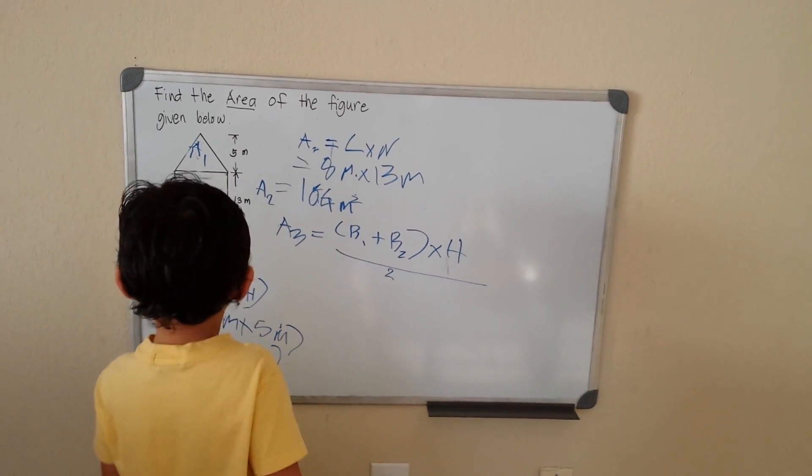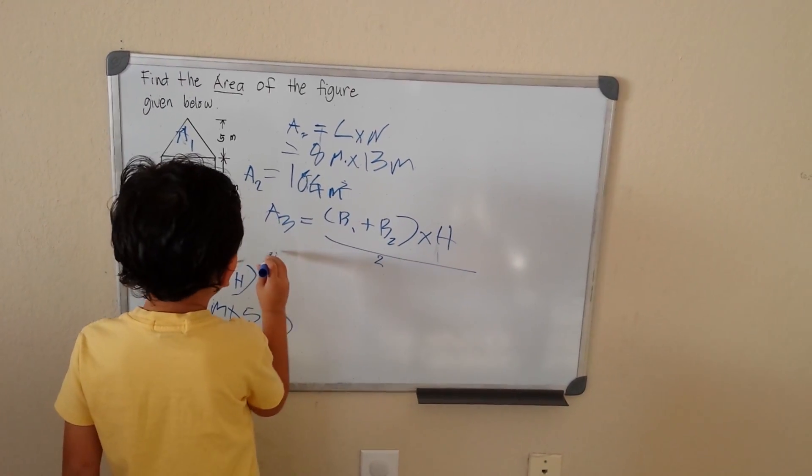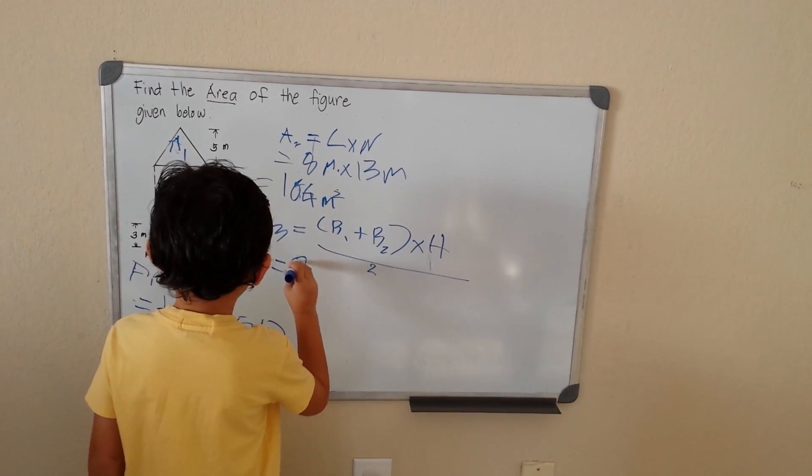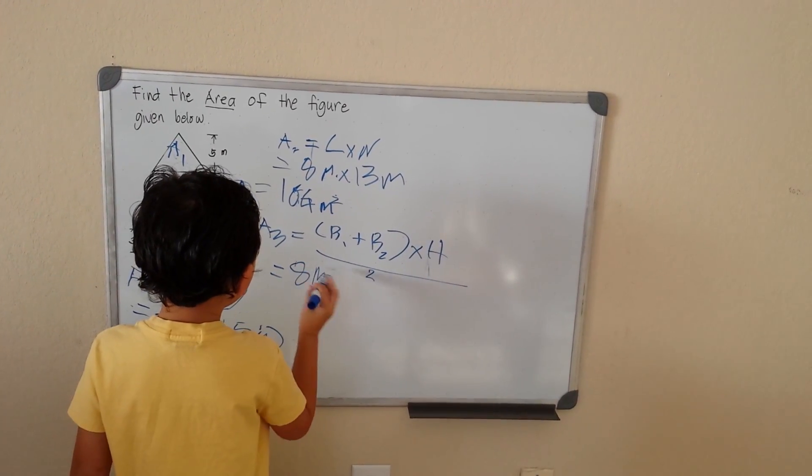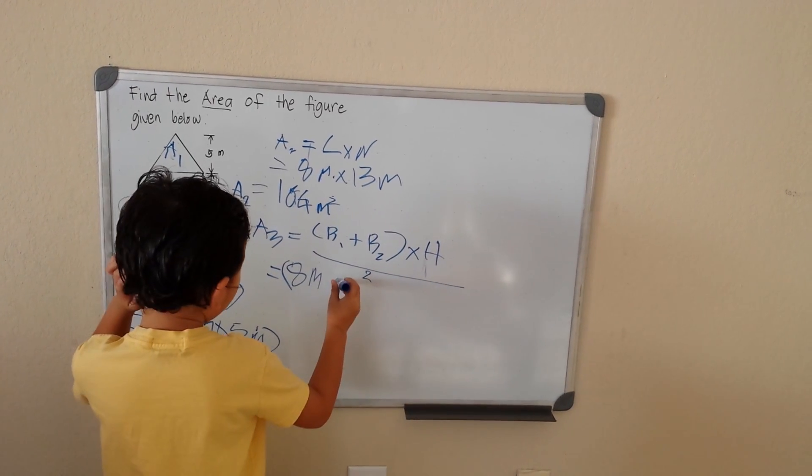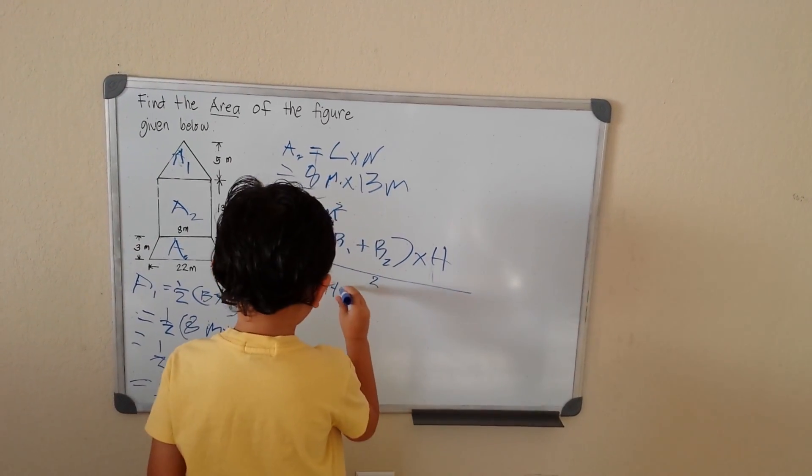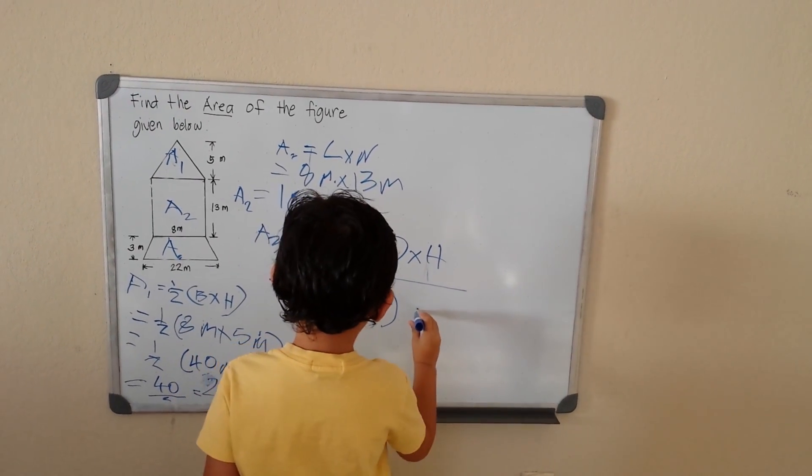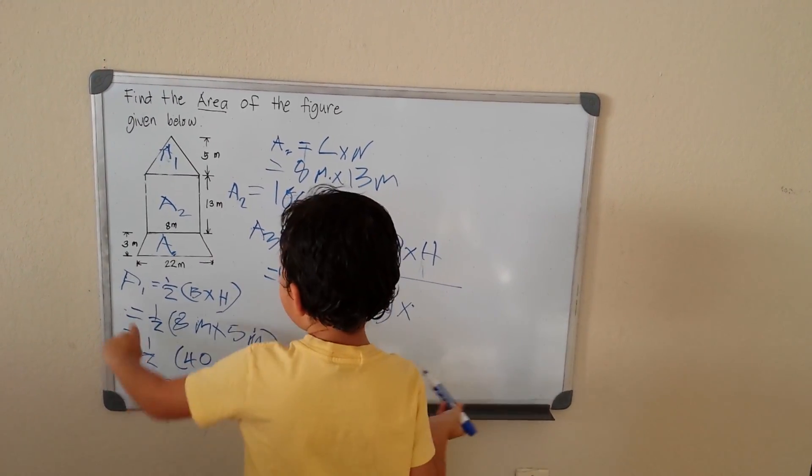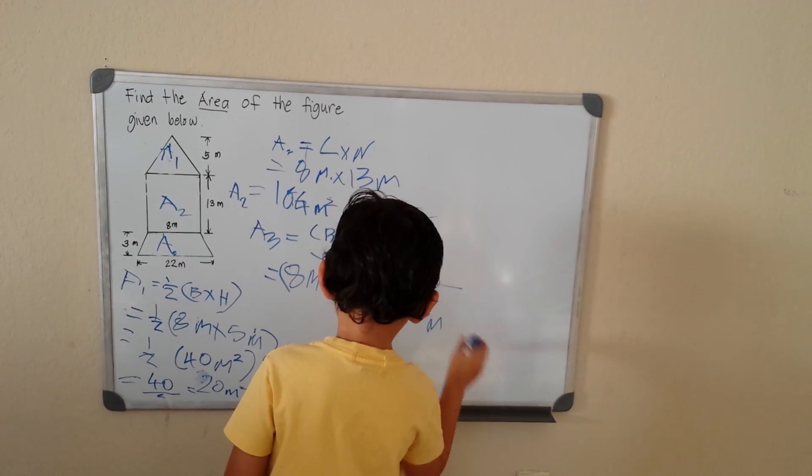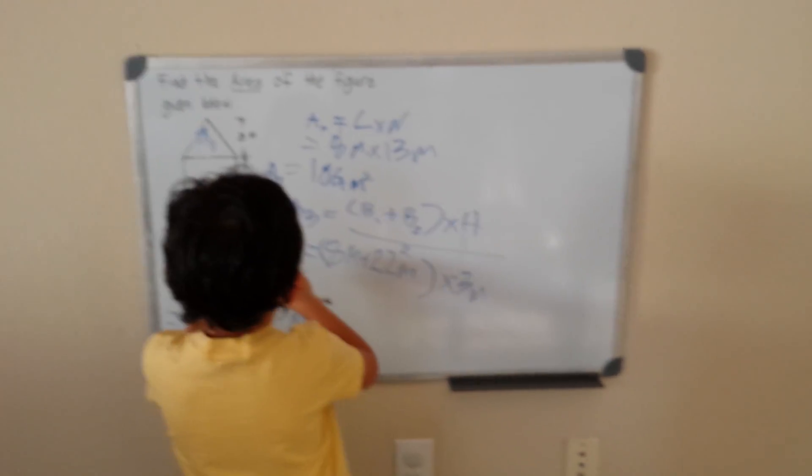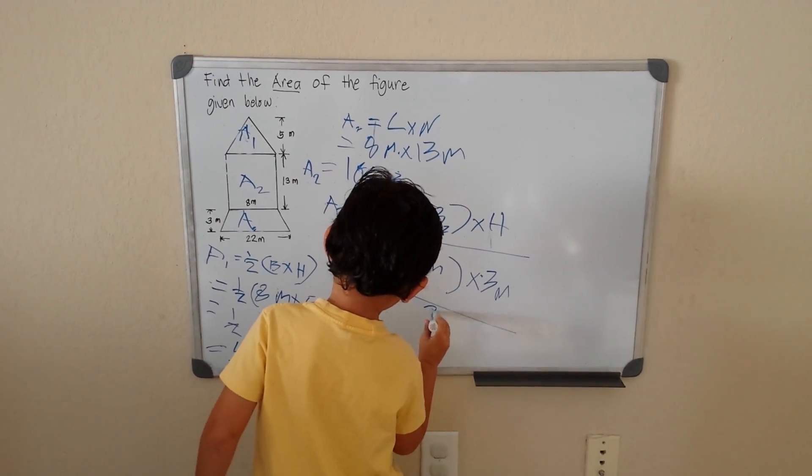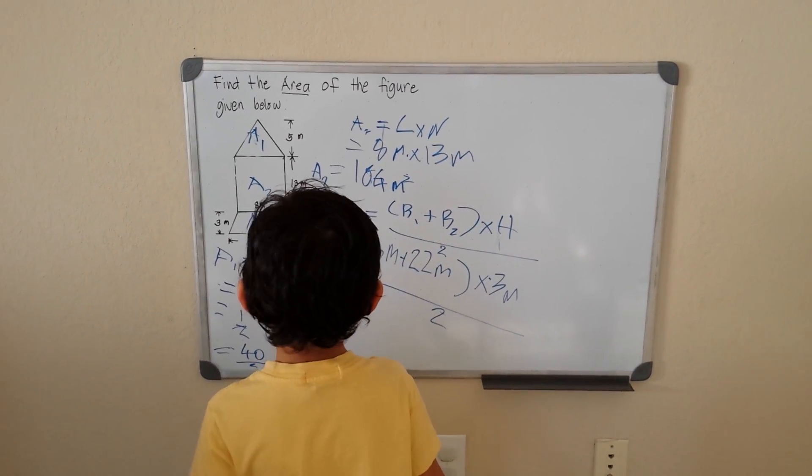My B2 would be 8 meters. So 8 meters plus 22 meters times 3 meters, divided by 2. You can add 8 plus 22 and give me 30 times 3, which is 90.